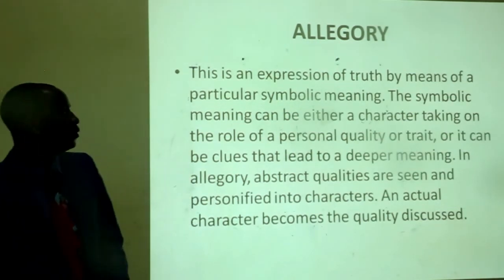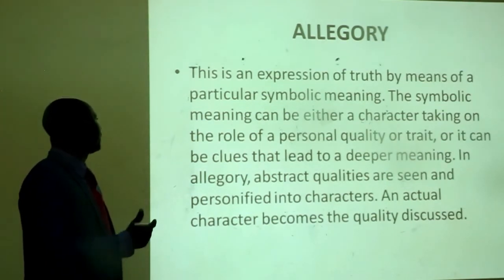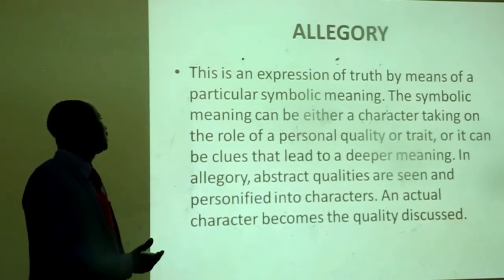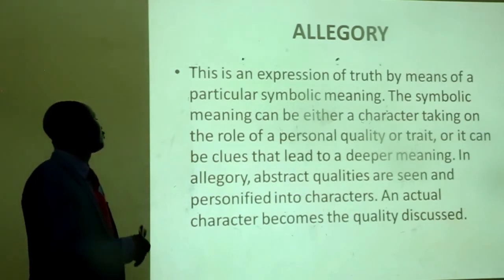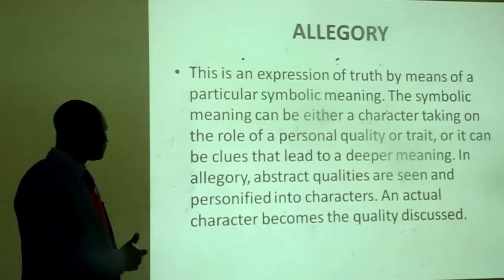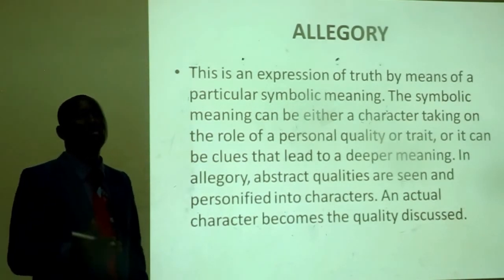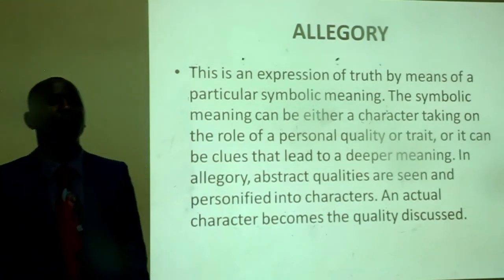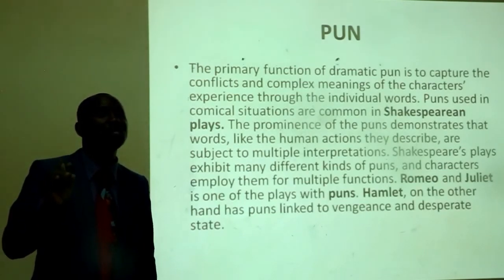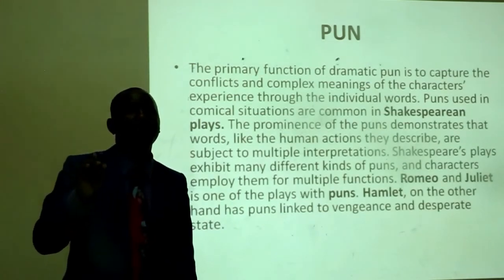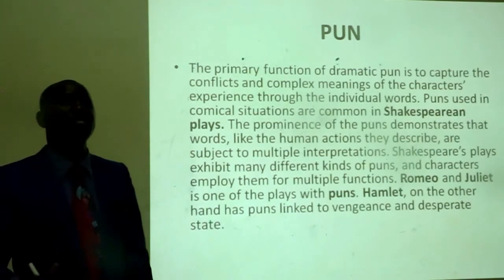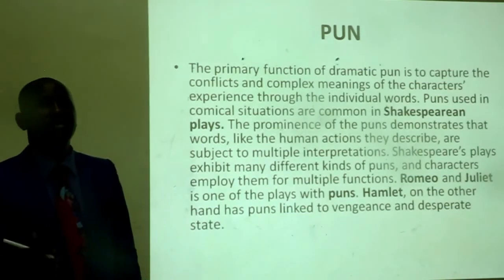What is an allegory? Allegory is an expression of truth by means of a particular symbolic meaning. The symbolic meaning can be either a character taking on the role of a personal quality or trait, or clues that lead to a deeper meaning. In allegory, abstract qualities are personified into characters — an actual character becomes the quality discussed. What is a pun? The primary function of dramatic pun is to capture the conflicts and complex meanings of the characters' experience through individual words. Puns used in comical situations are common in Shakespearean plays.